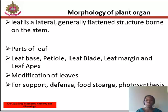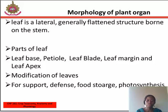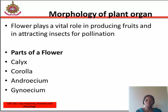Functions of the leaves: 1. They help in the manufacture of food by the chloroplasts. 2. They help in the interchange of gases between the atmosphere and the plant's organs. 3. They are organs of vegetative propagation.